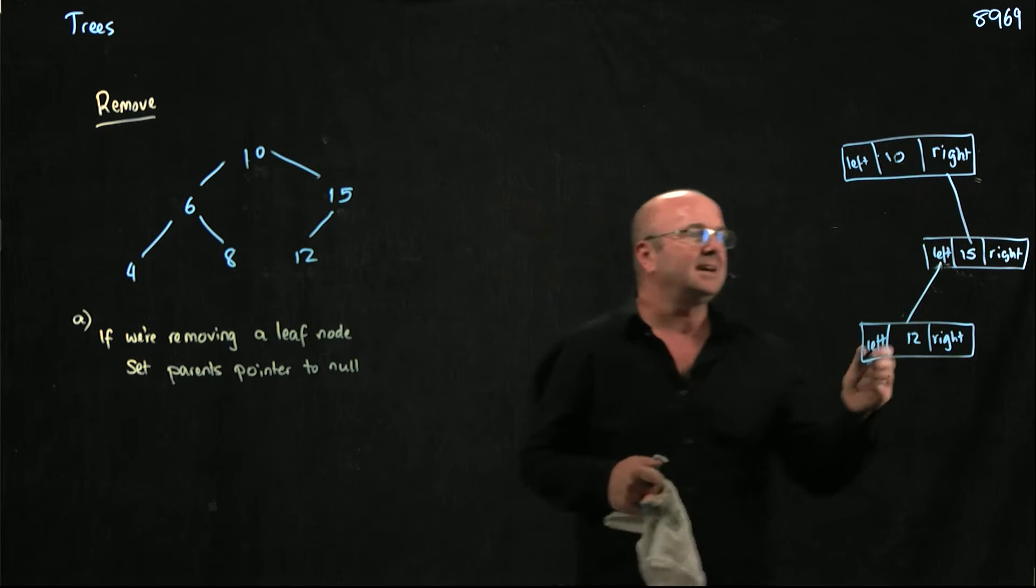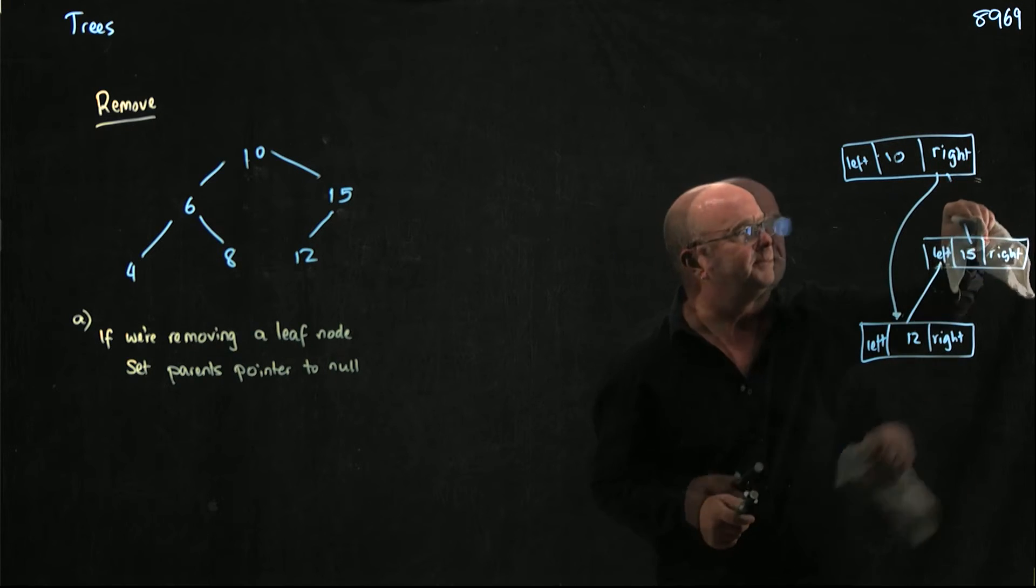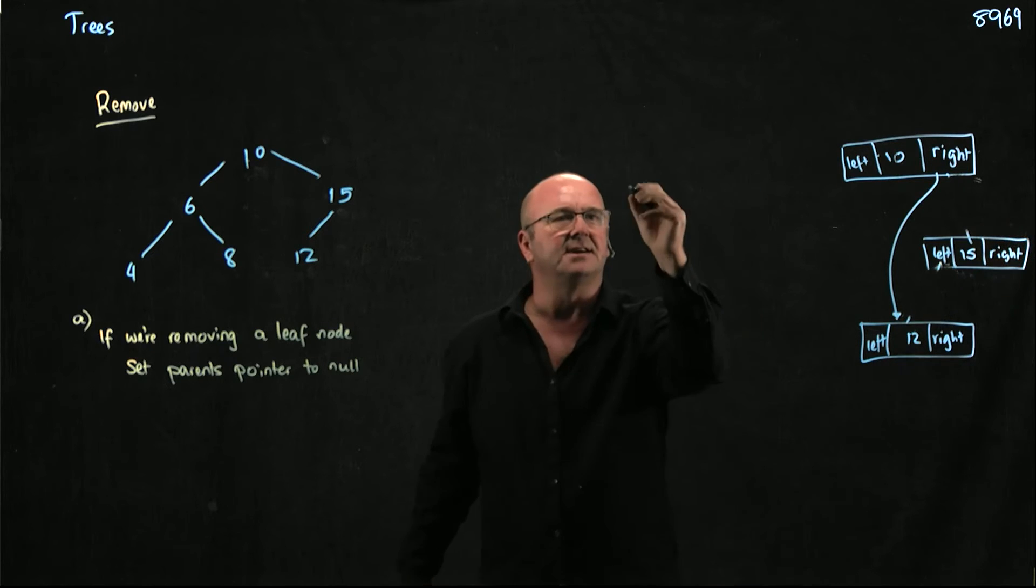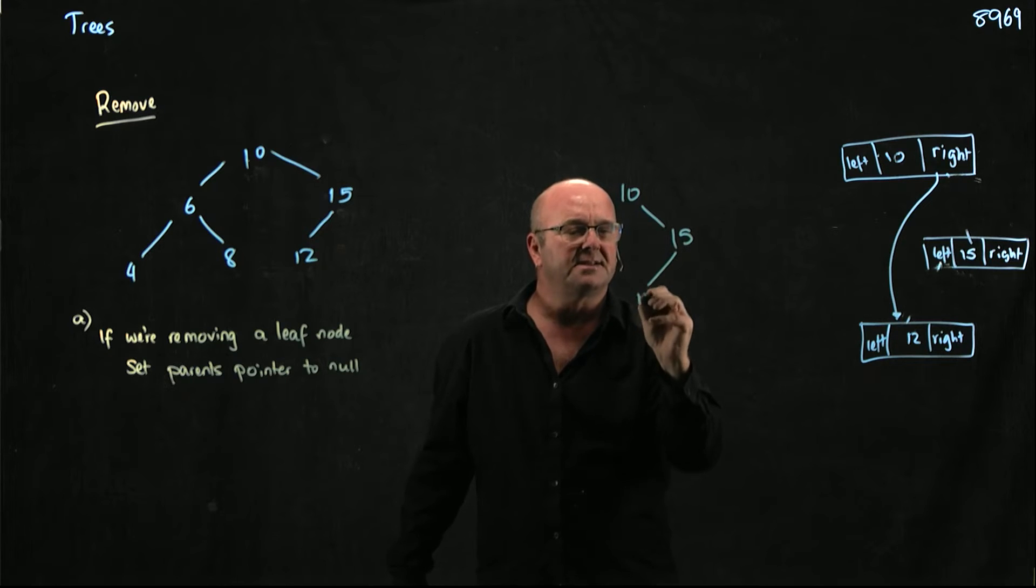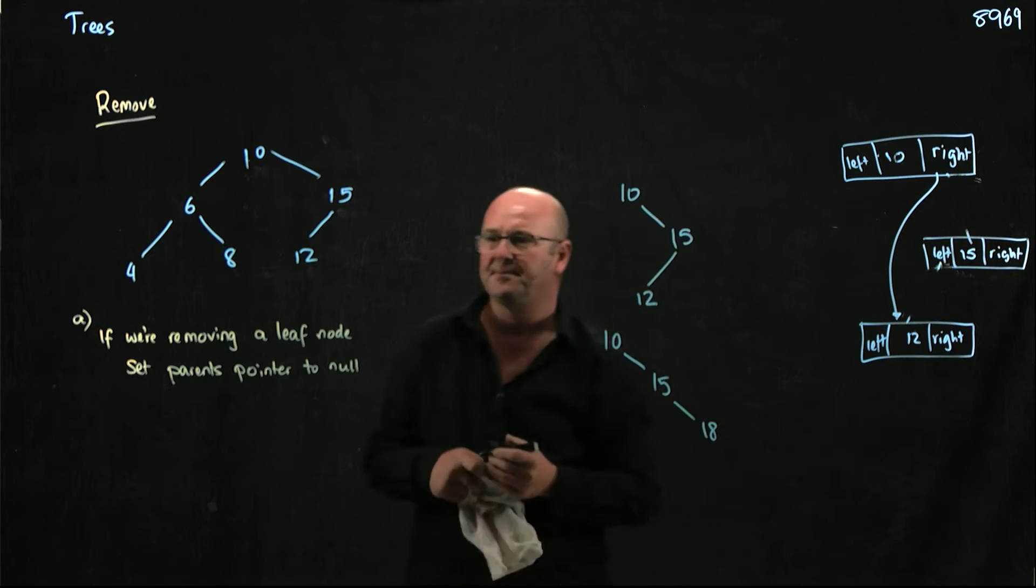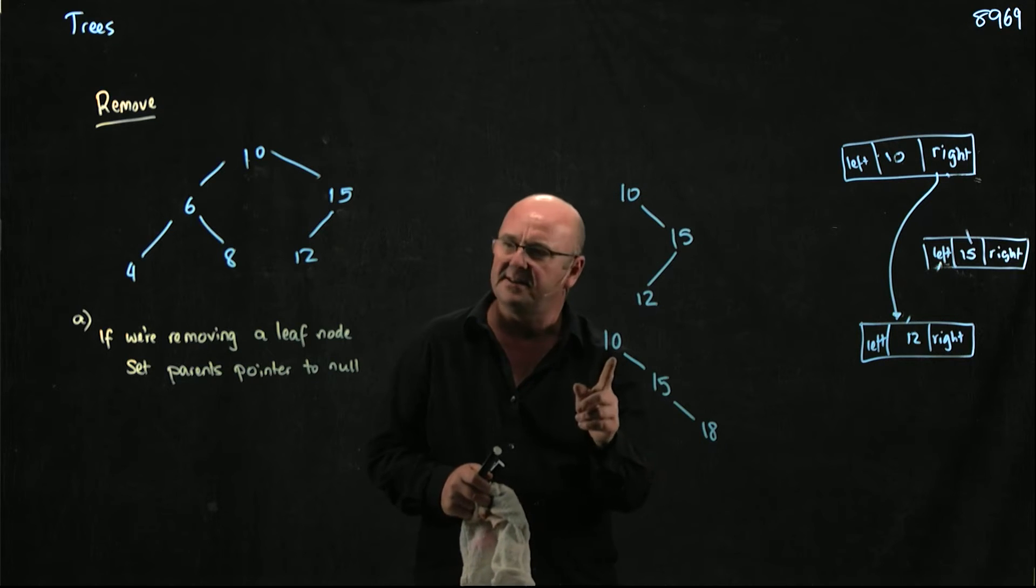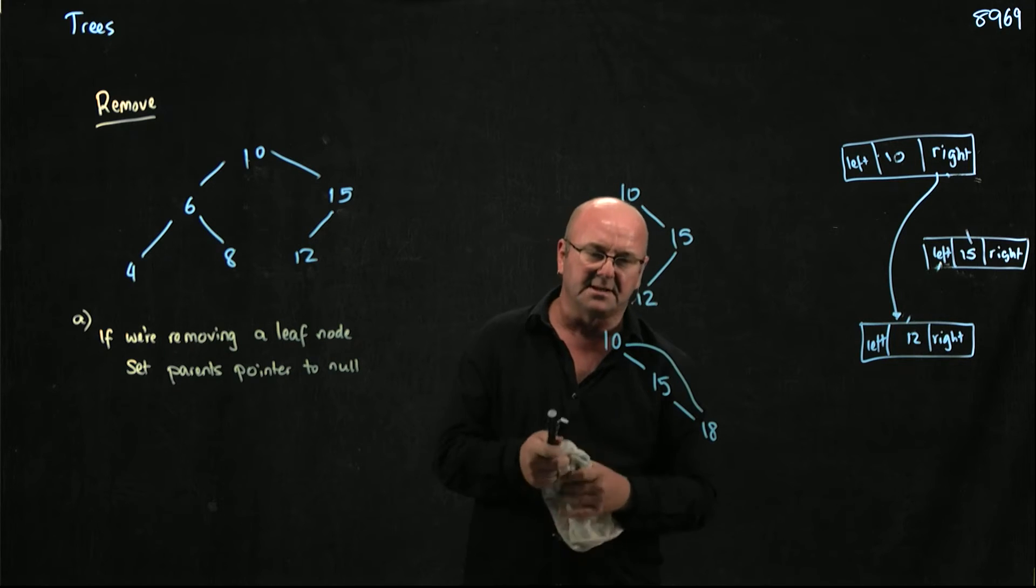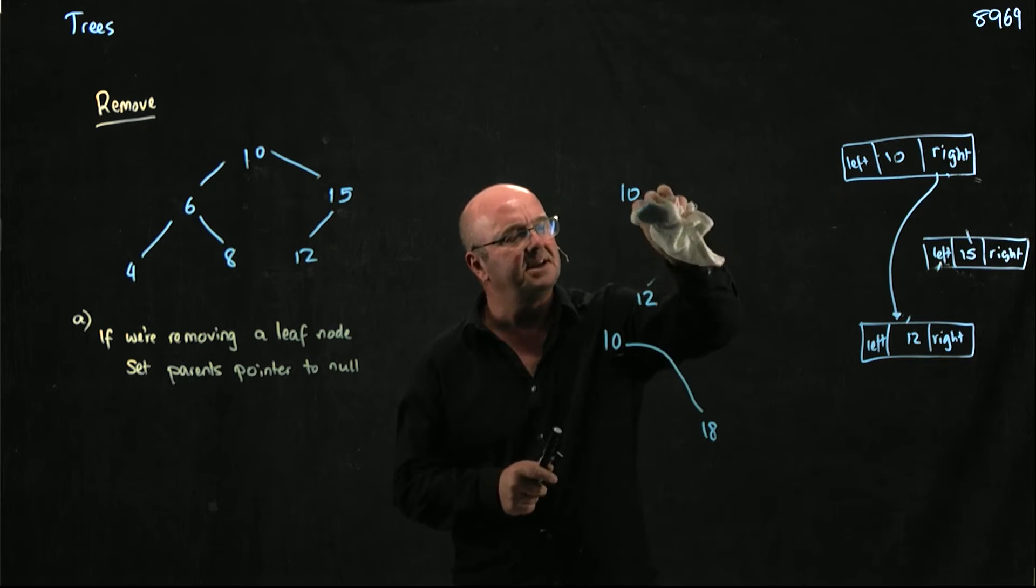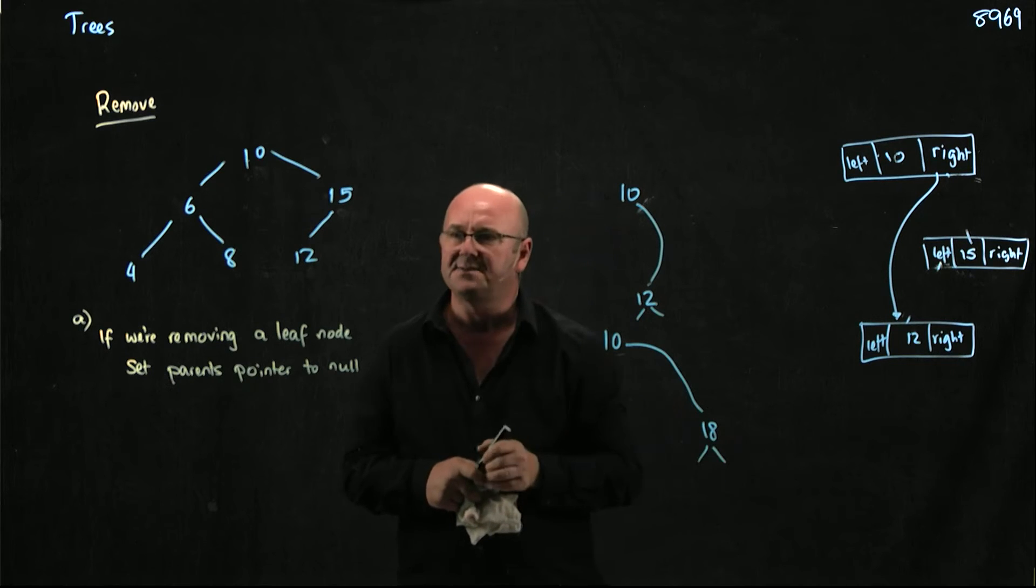So all we have to do is set the right child from its parent to point to the node that we want to delete. That breaks this link here. And then when the method ends, this 15 will get garbage collected away. Does it matter if we've got one child? Does it matter if we have one child like this or if we have one child like this? It doesn't matter, right? So the 18 is still bigger than the 10. And so we would still, when we deleted the 15, make the 18 to be the 10's right child. The 12 is still bigger than the 10. So when we delete the 15, we would still make the 12 the 10's right child. And notice as well that it doesn't matter if the 12 and the 18 have children.